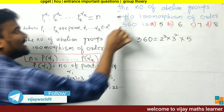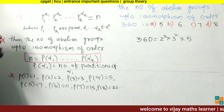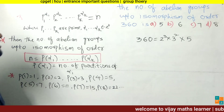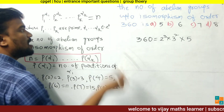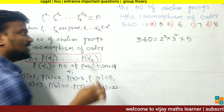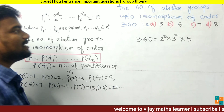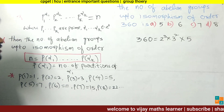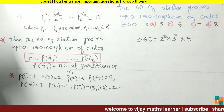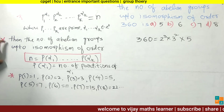Now let's look at the first problem: the number of abelian groups up to isomorphism of order 360. Here we have four options — option A is 5, option B is 6, option C is 7, and option D is 8. We will solve this problem using the relevant theory.